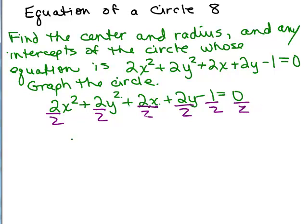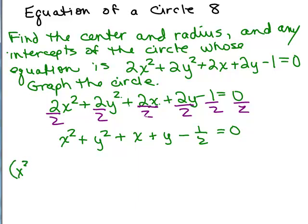After dividing, we now have x squared plus y squared plus x plus y minus one half equals 0. We're not afraid of fractions — we can deal with this. Let's put the x squared and x terms together: x squared plus x, and to make the coefficient clear, I'll write that as plus 1x. We know we're going to have to add something to complete the square.